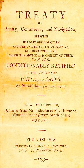The Jay Treaty was signed on November 19, 1794, and submitted to the United States Senate for its advice and consent the following June. It was ratified by the Senate on June 24, 1795 by a two-thirds majority vote of 20 to 10, the exact number necessary for concurrence.